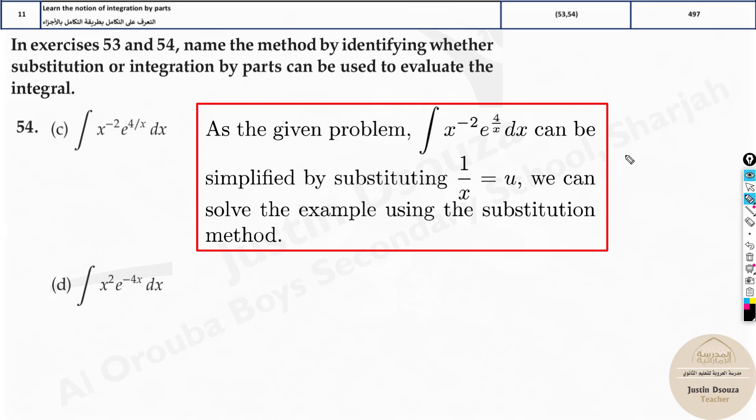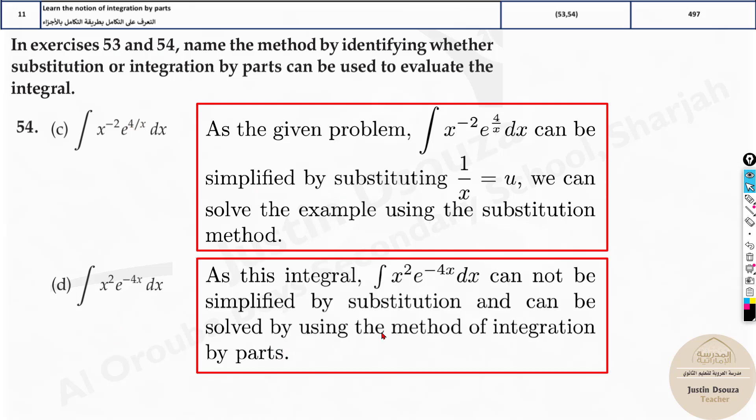Because 4 is constant. We assume only u to be 1 by x. Because our intention is to cancel out this x term. That 4, it doesn't matter. You write it as 4u and simplify. But here you cannot do, you must do integration by parts. That's by the formula. So we are not solving, we are just telling which methods.